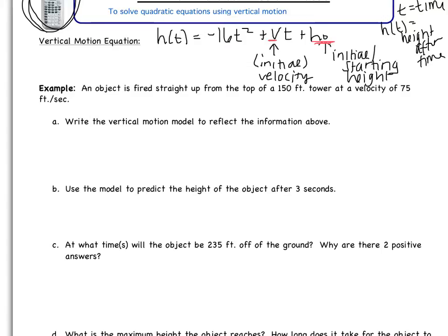So let's look at our first example. It says an object is fired straight up from the top of a 150-foot tower at a velocity of 75 feet per second. Part A: Write the vertical motion model to reflect the information above. Okay, well I already told you H of T stays there. Then I have negative 16 T squared add. Now I've reached the first point where I need to substitute. V is the velocity. Okay, well it says I have a velocity of 75 feet per second. So I'm going to add 75 T plus. And then H of 0 is the initial height. Well it says it's fired straight up from the top of a 150-foot tower. So that means our object starts 150 feet above the ground. So plus 150. So that's part A. Not too bad.